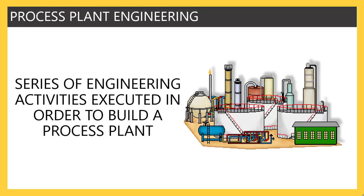Process plant engineering is nothing but a series of engineering activities executed in order to build a process plant. When you do engineering, piping is not the only team involved — you have civil, mechanical, instrumentation, electrical, safety, and process engineers. Various disciplines come together to build one product, and the name of that product is the process plant.